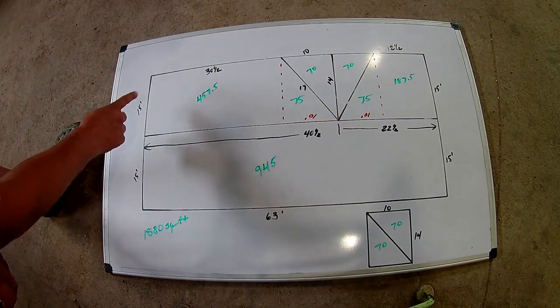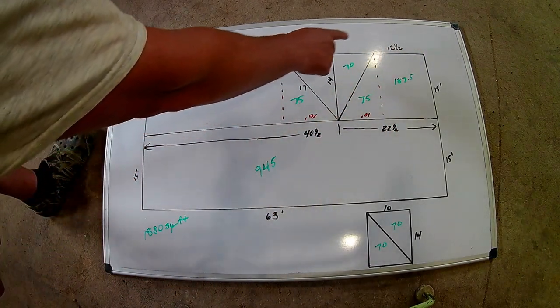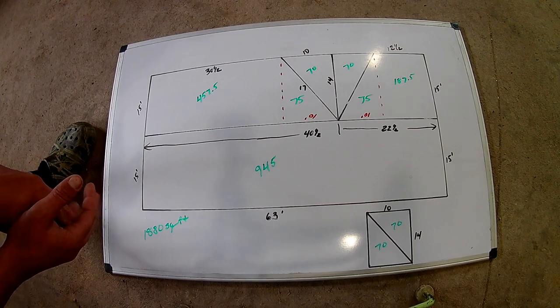As far as drip edge, you're going to need 15, 15, 15, 15, 10 and 10. That's how much gutter apron you will need.